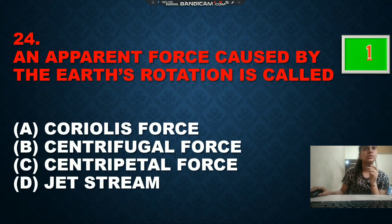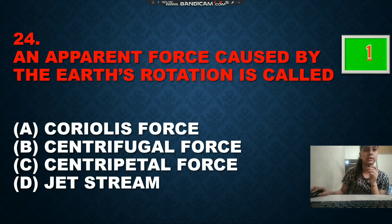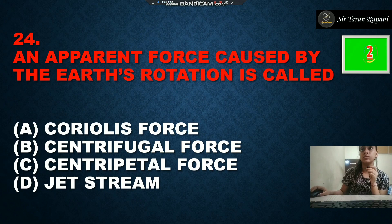Our next question: an apparent force caused by the Earth's rotation is called — option A is Coriolis force, option B is centrifugal force, option C is centripetal force, and option D is jet stream. The correct answer is option A, Coriolis force.